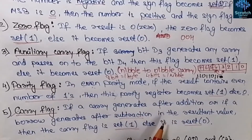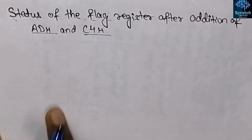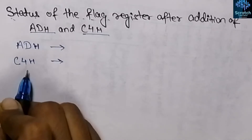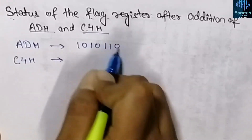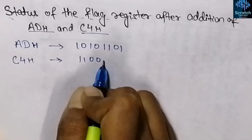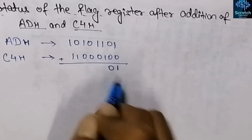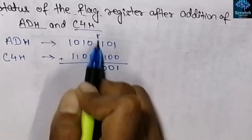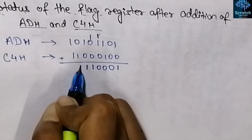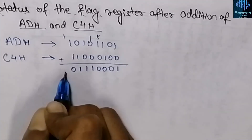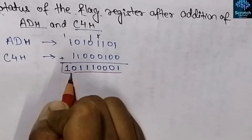Now let's consider an example to find the status of all the flag registers. We need to find the status after addition of AD hex and C4 hex. Converting to binary: AD hex is 1010 1101, and C4 hex is 1100 0100. Adding them gives an 8-bit result with a carry generated.